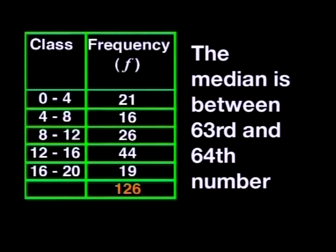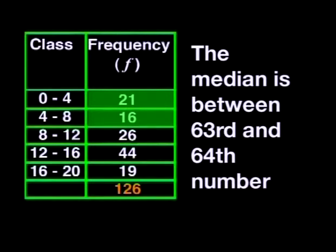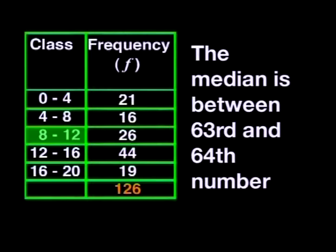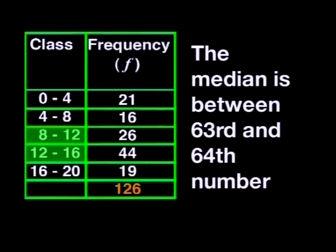Look at these frequencies. The median won't be in the first class, which has 21 children in it. By the end of the second class, we've counted 21 plus 16 children — that's 37. So the median isn't in that class either. But if we add the frequency from the third class, we get 37 plus 26, which is 63. So the 63rd number is in the third class and the 64th number will be in the fourth class — age groups 8 to 12 and 12 to 16 years old. The median must be 12, meaning approximately half the children are younger than 12 and half are older.